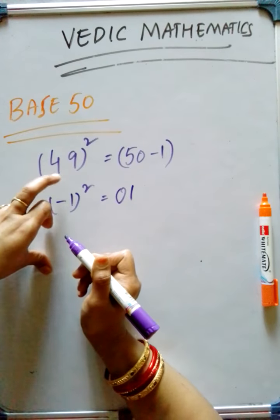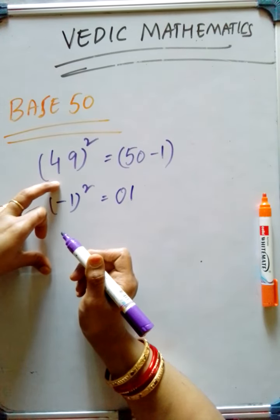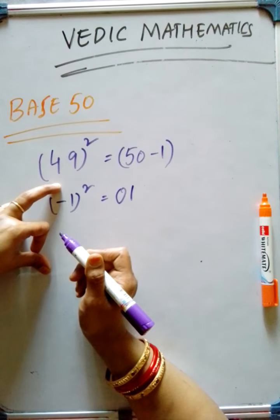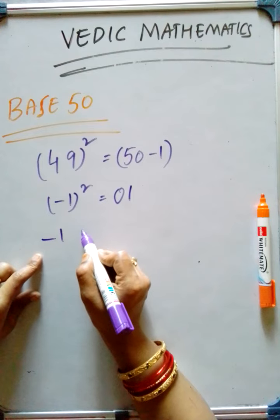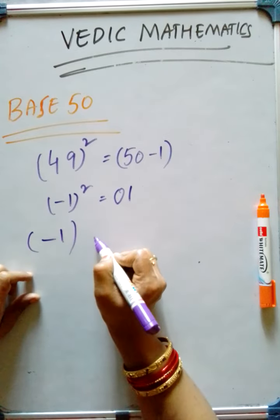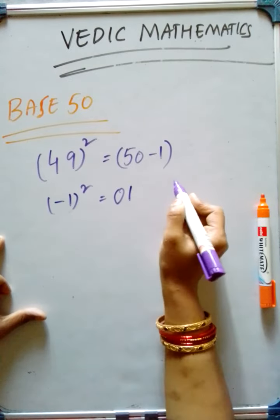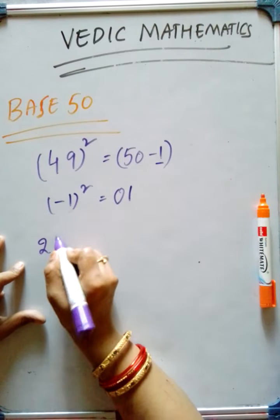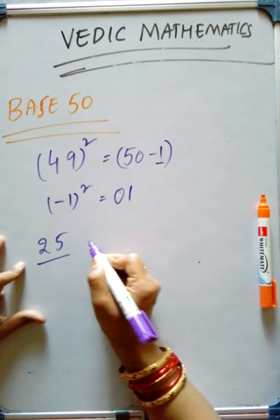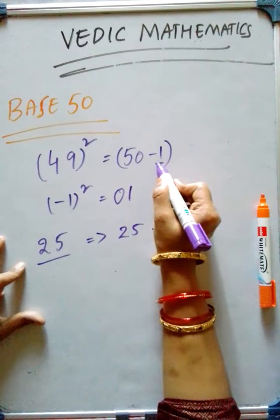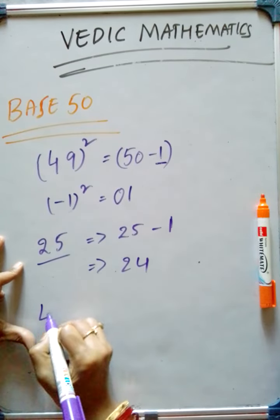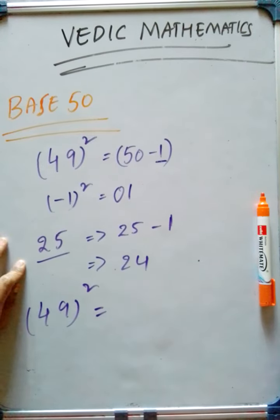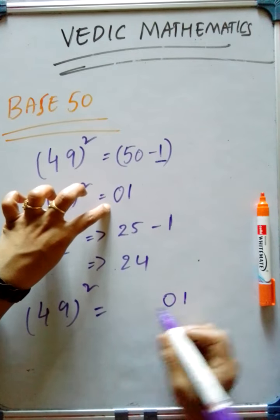In step 2, what we have to do? How much the value is less than 50? The given value is less than 50 by minus 1. What we have to do? We have to subtract this 1 from 25. That is equal to 25 minus 1, which is 24. The answer: 49 square is nothing but 2401. We have to write 0, 1 and 24.